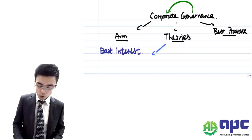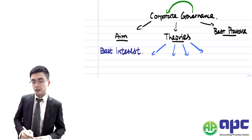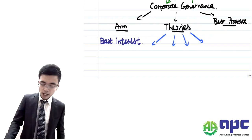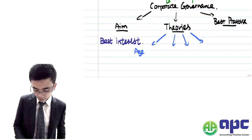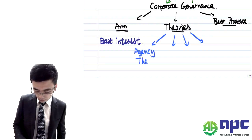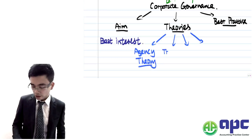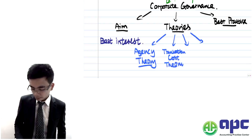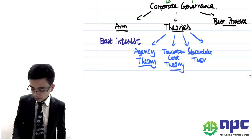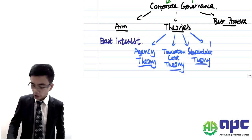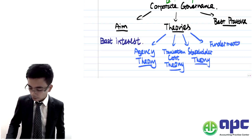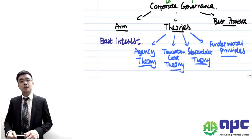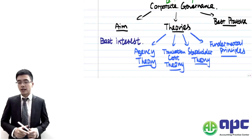There are particularly four theories we're going to look at today. The first theory is agency theory. After that, we'll look at the transaction cost theory, then the stakeholders theory, and also the fundamental principles of corporate governance. Let's kick off with the first theory, which is the agency theory.